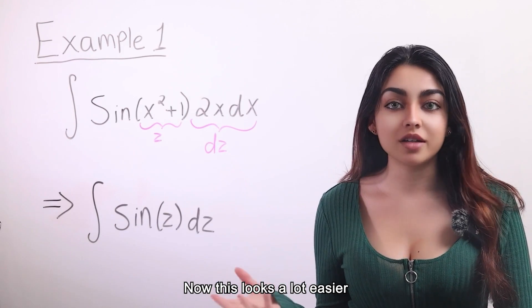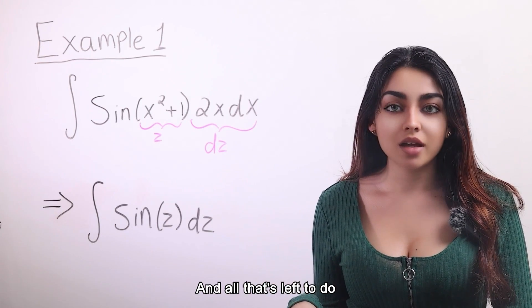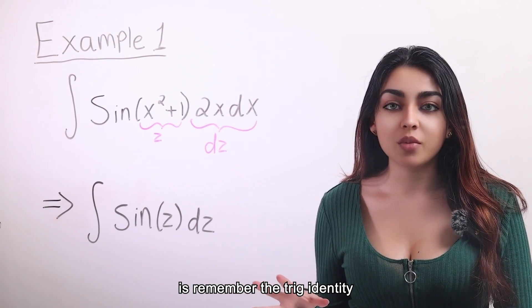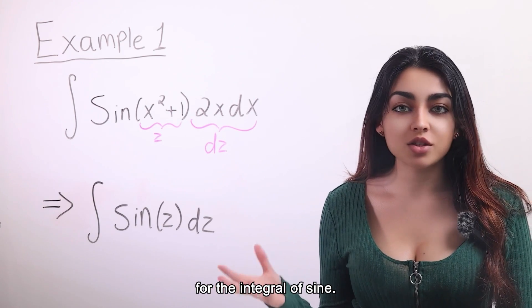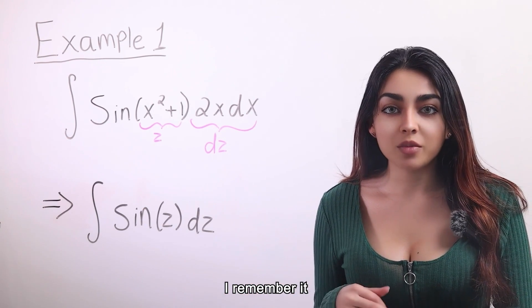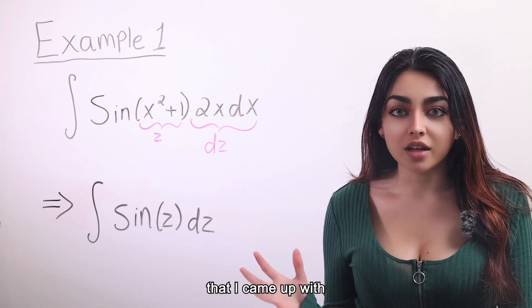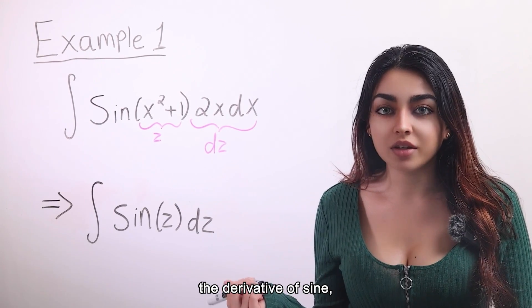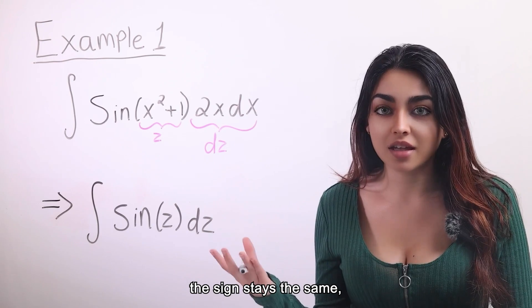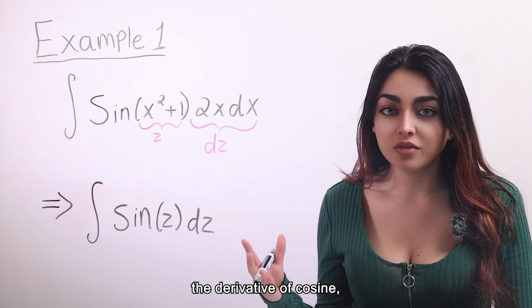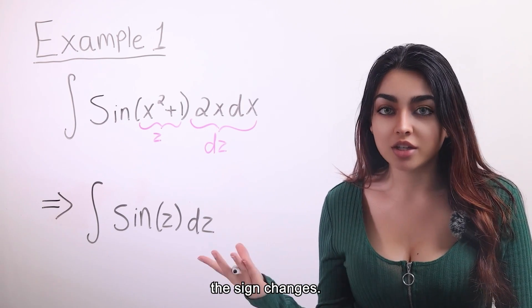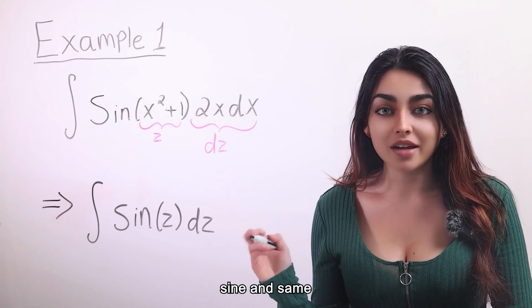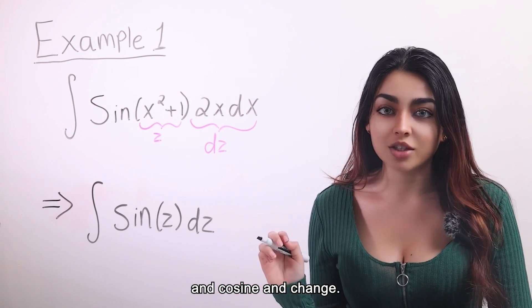Now this looks a lot easier to solve, doesn't it? And all that's left to do is remember the trig identity for the integral of sine. I remember it because of a little trick that I came up with when having to learn how to derive. When you take the derivative of sine, the sine stays the same. And when you take the derivative of cosine, the sine changes. So I remember sine and same and cosine and change.